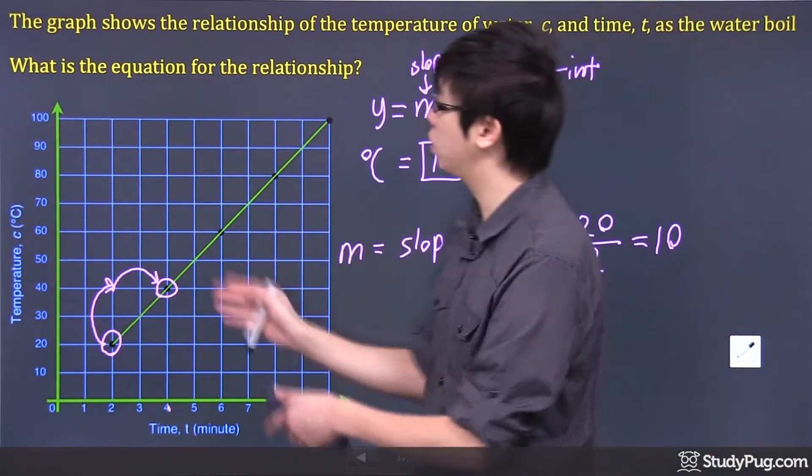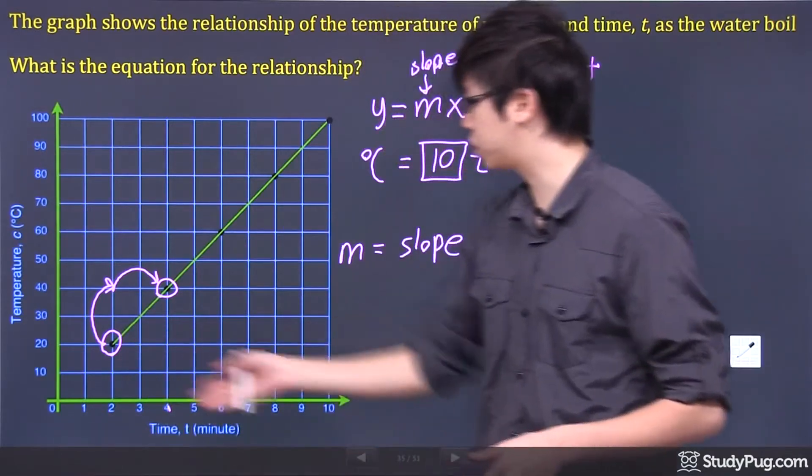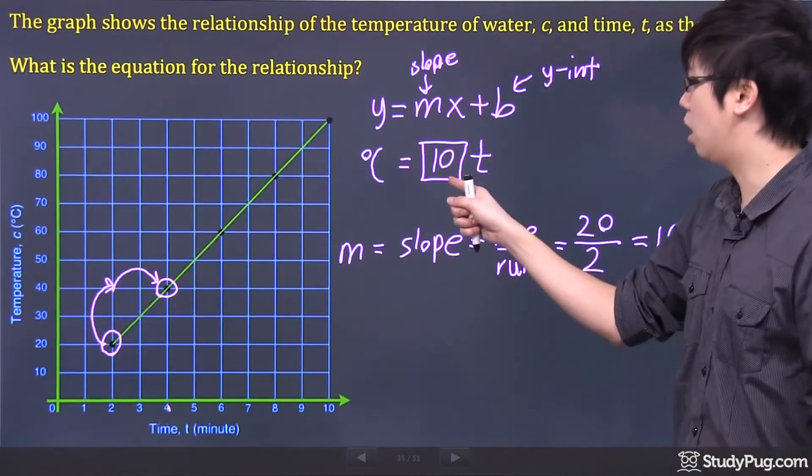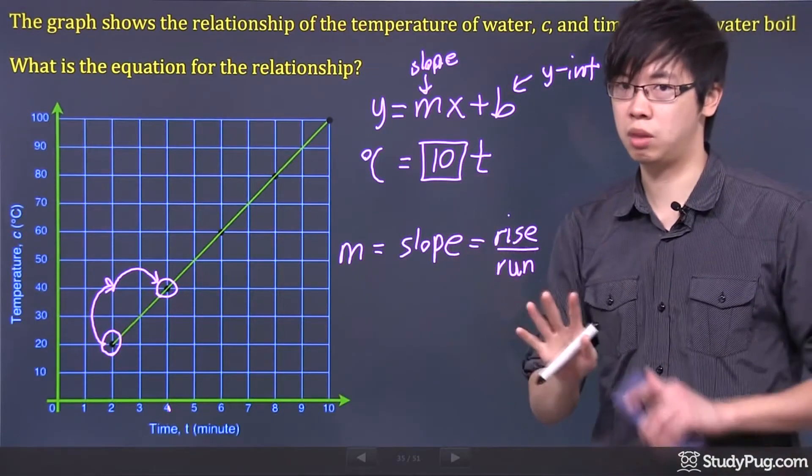So the relationship between the degree Celsius, right here, versus the time, is just that the degree, the temperature, is equal to 10 times the t. That's it.